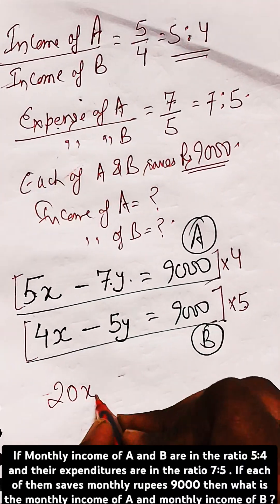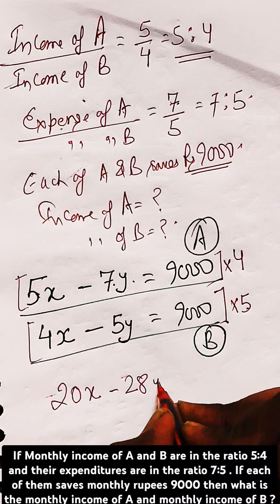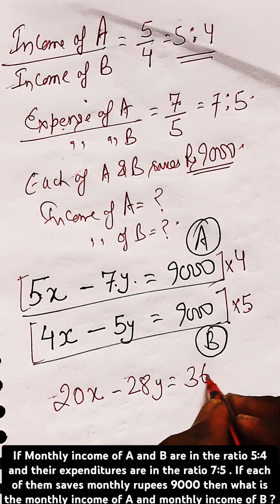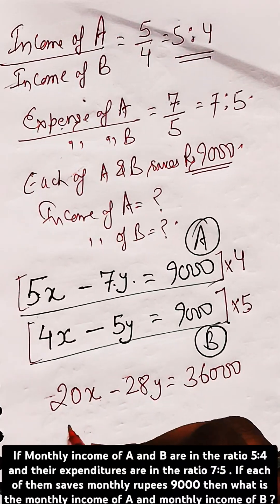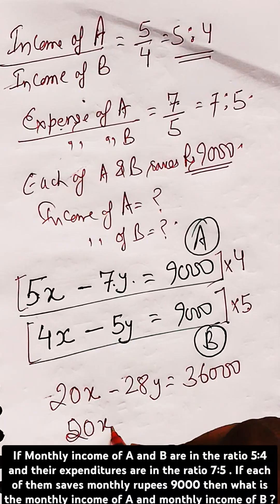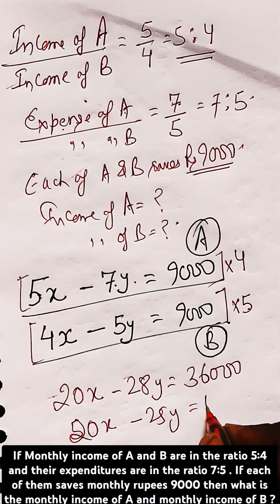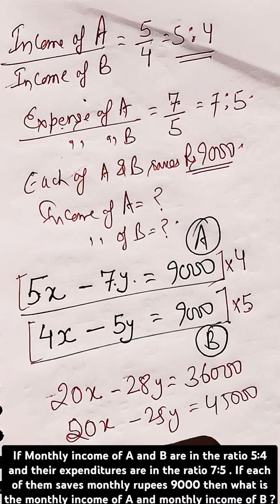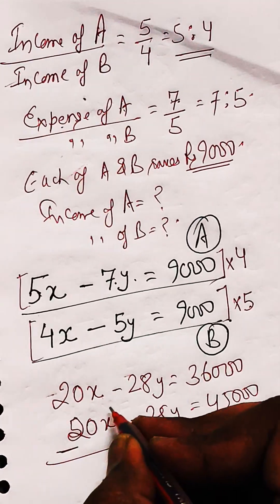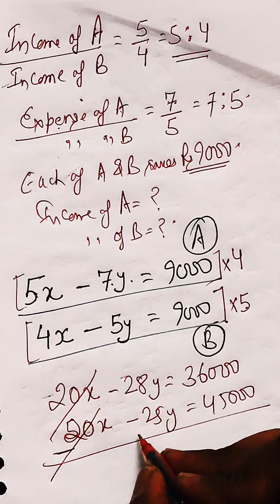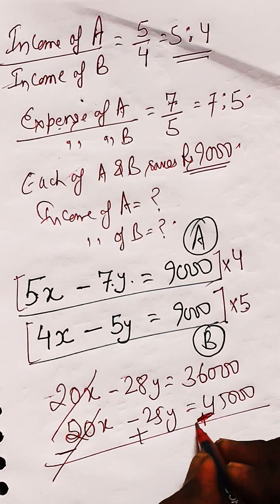This will give you the equation 20x minus 28y equals 36000, and the second equation 20x minus 25y equals 45000. When you subtract, 20x will be cancelled out.